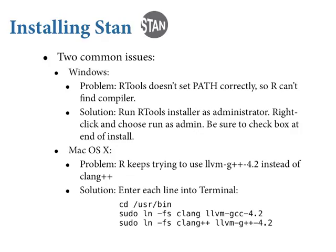On macOS, for reasons I don't know why — I only know how to fix it — for some of you, R thinks you have G++ still and keeps calling it, and you don't. Because all the new Xcode installations have a way better compiler: Clang. So my solution is just to trick your computer by creating a symbolic link. If you execute these three lines one at a time in terminal, it'll work. It has worked for everybody so far. Every time it calls G++, it's actually calling Clang.